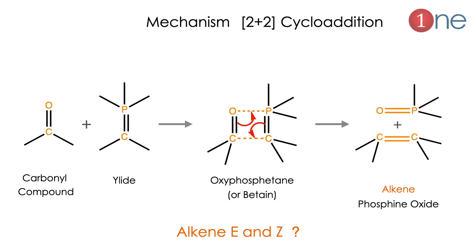Let us see what is really happening inside. The mechanism here is a 2+2 cycloaddition, where the two molecules combine and form the product. The carbonyl and phosphine compounds form a four-membered transition state — it is cyclic. It is driven by the phosphorus-oxygen bond, so the molecules come closer. The final product has phosphorus taking away oxygen, and a new carbon-carbon bond is formed. The intermediate is called oxaphosphetane or betaine. The alkene is the final product, and the normal question will be whether the alkene is E or Z.